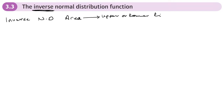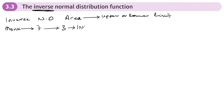That means we need to change the mode on our calculator. Press Menu and 7, which will take you to the distributions menu. And we want inverse normal.